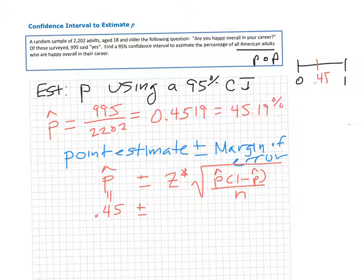To get Z-star, this is the number of standard errors you need to move in each direction to trap the middle 95% of the area. From the empirical rule, we know this is about two standard errors. It turns out it's exactly 1.96.